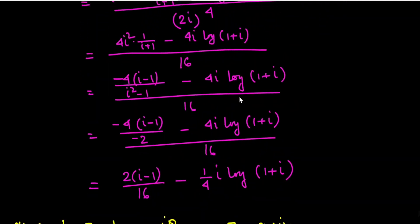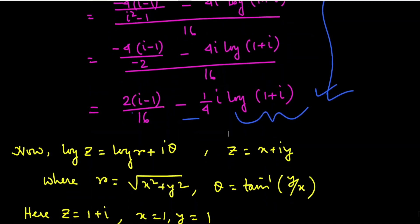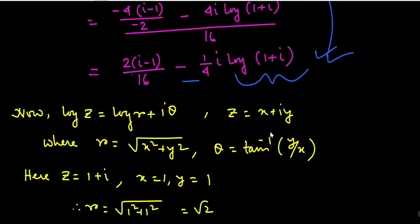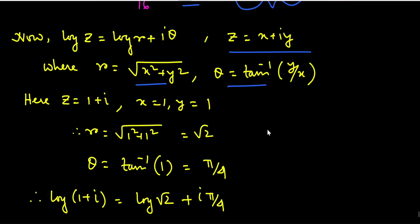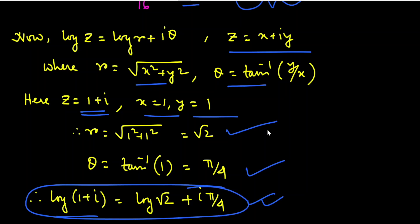After substituting z = i, the expression simplifies to: 1/(1+i)² · 1/(2i)² - log(1+i) · 2(2i) / (2i)⁴, which further reduces to 2/16 · (1-i) - (1/4i) · log(1+i). Now we find the real and imaginary parts of log(1+i): writing z = x + iy with x = 1, y = 1 gives r = √2 and θ = π/4, so log(1+i) = (1/2)ln 2 + iπ/4.